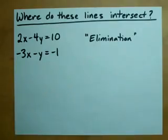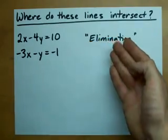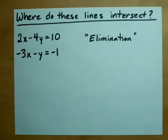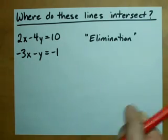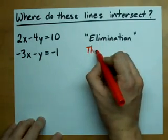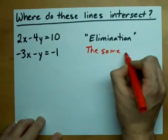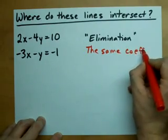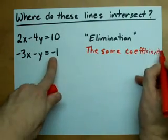We can find that point using something called elimination. Let me show you how this works. The key here is to have the same coefficient, and that by coefficient I mean the number that's in front of the letter.